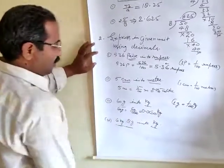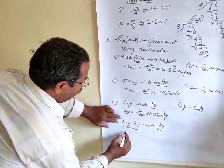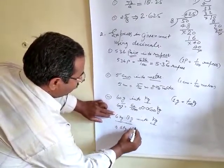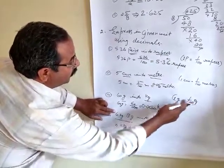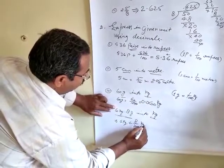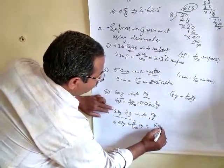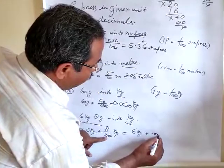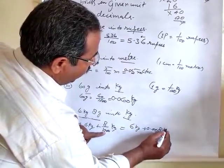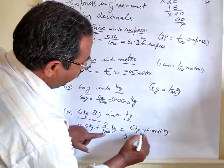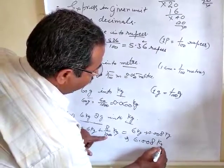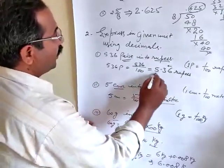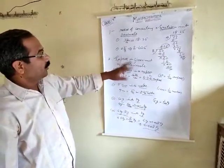When kilogram and gram both are given, in this type of situation you should write the kilogram part as usual, then write plus. The gram part should be changed using the unit rule: 8 gram equals 8 by 1,000 kilogram. That is three zeros, so after the decimal point there should be three digits: 0.008 kilogram. Adding them gives 6 kilogram plus 0.008 = 6.008 kilogram. In this way you can change different units using decimals.